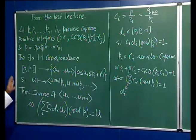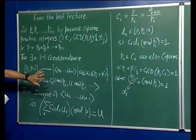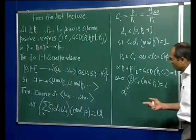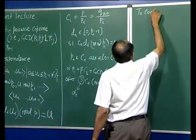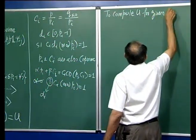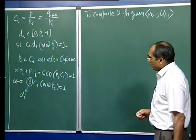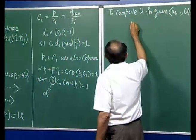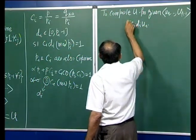For now I am going to assume that the D_i's are pre-computed. If you are going to perform such computations repeatedly, you would have pre-computed the D_i's. Now let us look at computation of u from a given tuple (u_0, ..., u_{n-1}). If you look at this sum, you notice it can be broken as the sum of C_i times D_i times u_i for i going from 0 to n minus 1.